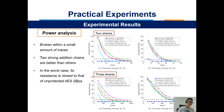In our power analysis, it can be seen that all implementations can be broken within a small number of traces, and the two strong addition chains are always better than the others. Most importantly, in the worst cases, the resistance is close to that of an unprotected S-Box.